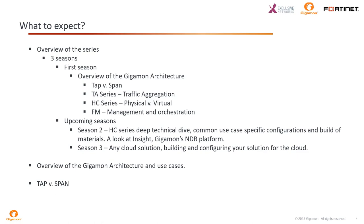Season two will also have at least one episode dedicated to Gigamon Insight, which is the new network detection and response platform. It will use the HC1 box as a network sensor. Insight is a SaaS-based solution designed by responders for responders — a unique cloud-based NDR solution that gives the user broad situational awareness combined with real-time access to historical data to accelerate threat detection and response. Good correlations, fast queries for threat hunting, less time spent determining root cause. If you have Gigamon on a customer's network, you can use it to send information to your NDR and offer clients more services.